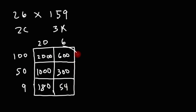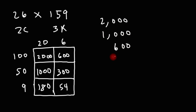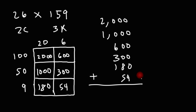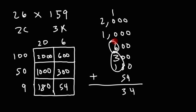And now we just have to add the six numbers in the box. We have 2,000, then 1,000, then 600, 300, 180, and 54. In the first column we just have 4. In the second column, 5 plus 8 is 13; write the 3, carry over the 1. 1 plus 3 is 4, plus 6 is 10, plus 1, that's 11; write the 1, carry over the other 1. And 1 plus 2 plus 1 is 4. So the answer is 4,134.